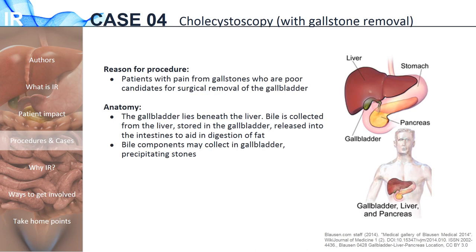The first GI case we will discuss is gallstone removal. Bile is a dark green or yellowish fluid that aids in digestion and is stored within the gallbladder, a small sac located beneath the liver. If stored for too long, bile may precipitate into stones. Occasionally, these stones may become trapped in the small duct from the gallbladder to the small intestine, resulting in inflammation that may persist to serious infection or even death. Traditionally, the gallbladder is surgically removed in patients with symptomatic gallstones. However, for patients who may be too ill for surgery, IR can utilize a minimally invasive approach to place a drain to decompress the gallbladder or even manually remove the stones.